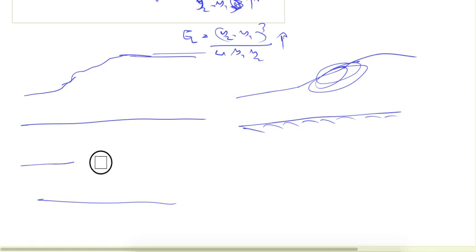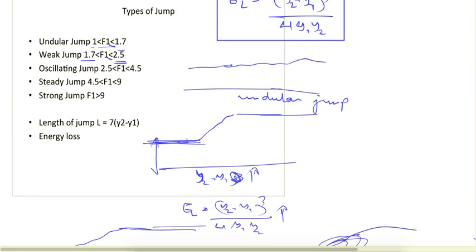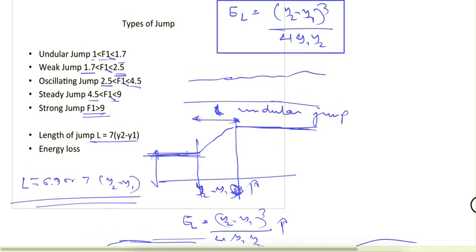In the case of a strong jump, the pre-jump depth y1 is very small and undulations travel a large distance downstream. For the length of the jump — defined as the distance from where the jump starts to where it meets the downstream water level — experiments show it is approximately equal to 6.907 × (y2 − y1). That concludes this unit; some examples will follow.